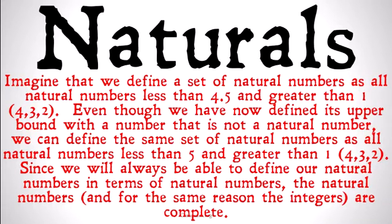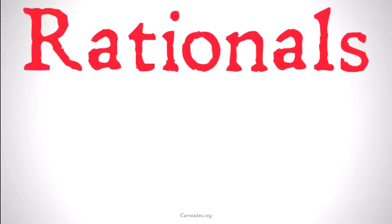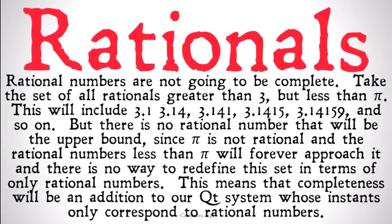Since we'll always be able to define our natural numbers in terms of natural numbers, the natural numbers — and for the same reason, the integers — are going to be complete. But now, rational numbers are not going to be complete.